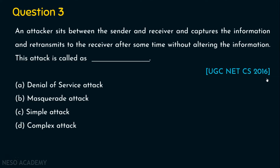Recollect the topic of security attacks, where we have seen both active attacks and passive attacks. The right answer is option A, denial of service attack. This is actually a replay attack — the attacker captures the packet and retransmits it to the receiver after some time without altering the information. When he keeps on retransmitting again and again, the server receives a lot of requests, becomes overloaded, and cannot handle new requests. So the legitimate party is denied from getting the service — this is an example of denial of service attack.